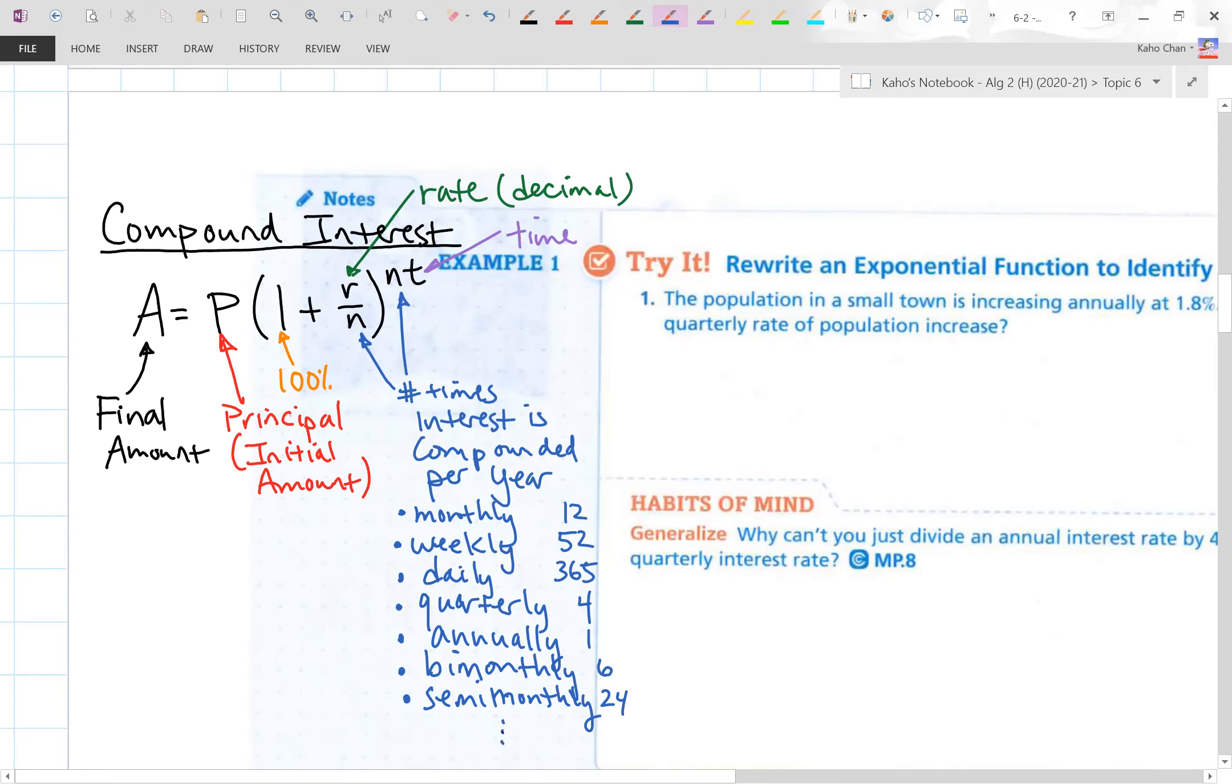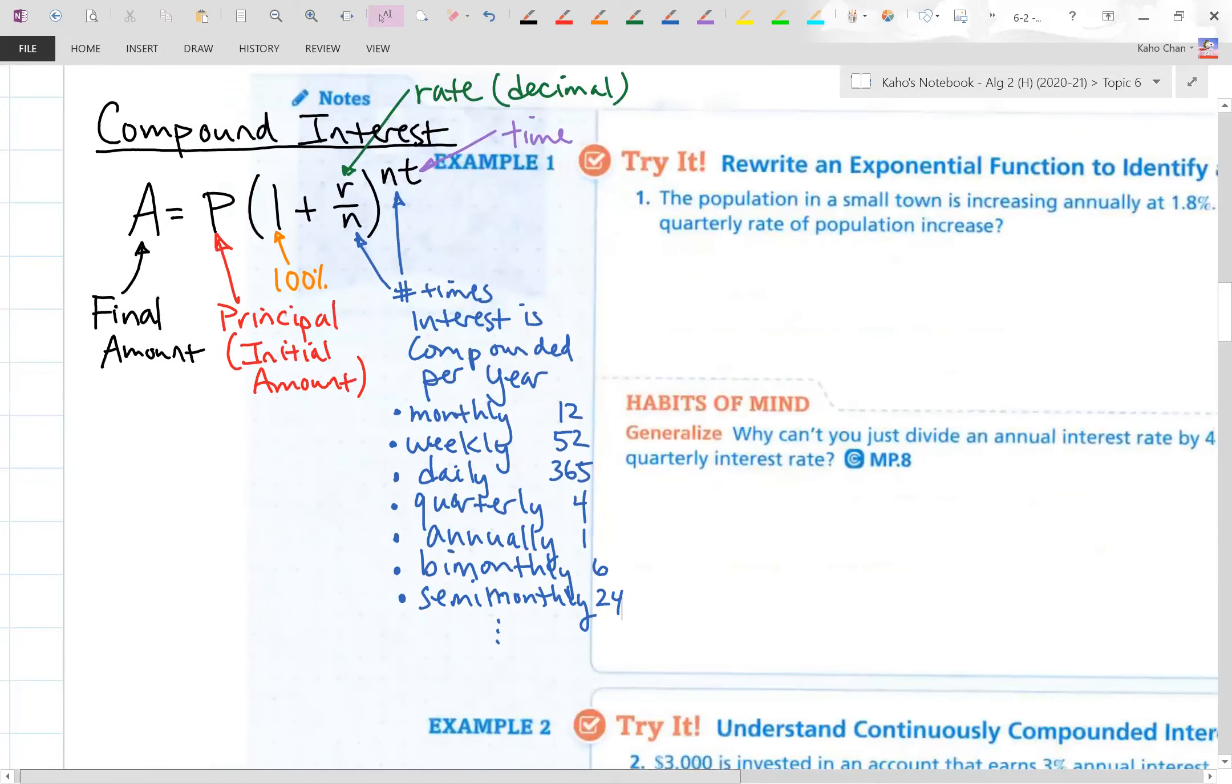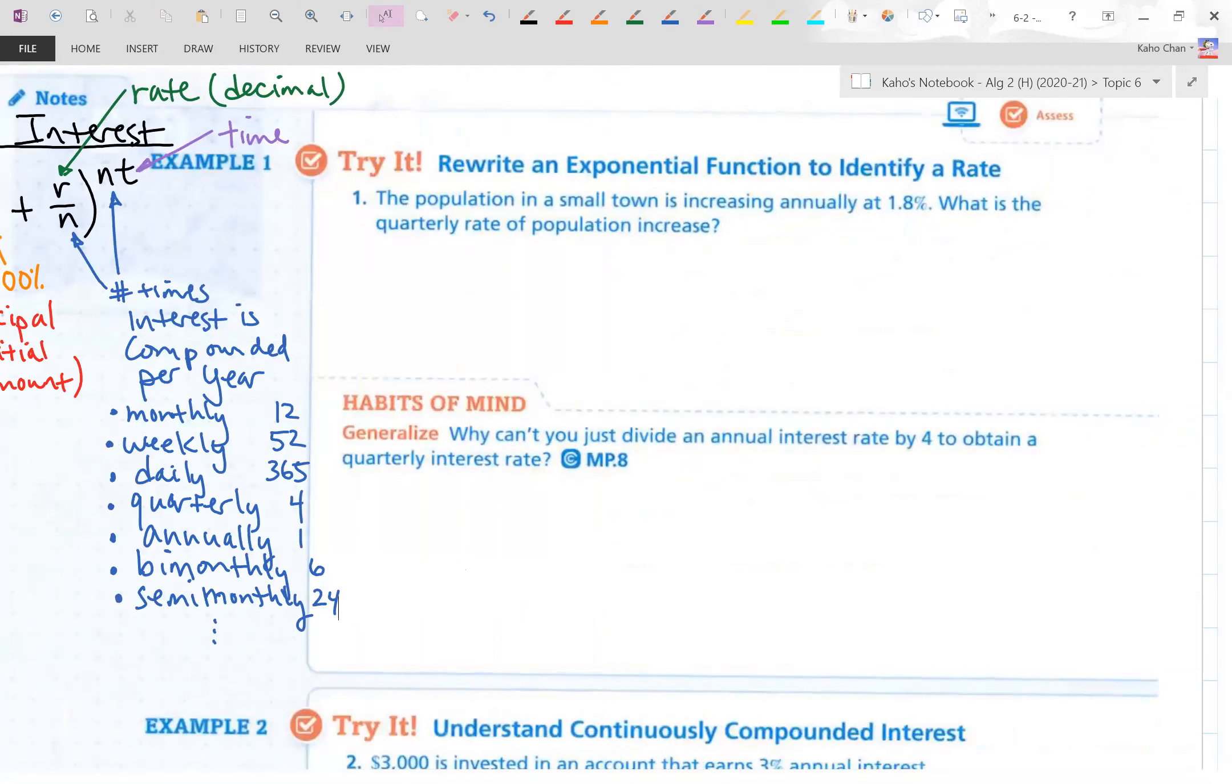I could go on and on and on and on. Now, number one, I didn't really know about until I jumped into this particular book. It's kind of interesting. Rewrite an exponential function to identify a rate. They tell you the population in a small town is increasing annually at 1.8%. When you convert 1.8%, that is 0.018 as a decimal. Here, for this particular problem, we are dealing with growth. It increases by 1.8%. Question, what is the quarterly rate of population increase? Now, this is kind of like working backwards. They tell you at the end of the year, we make an additional 1.8% increase in the population. Question, what if you were to chop up that year into four quarters? That's where four quarterly rate comes in.